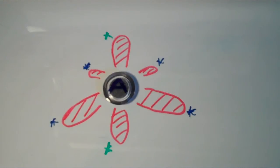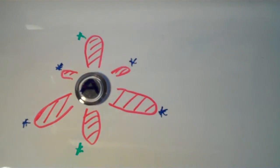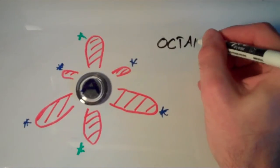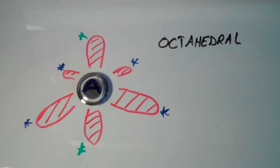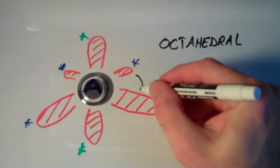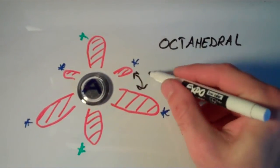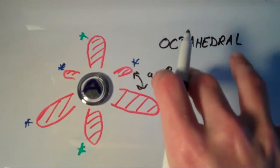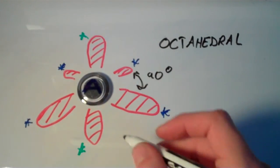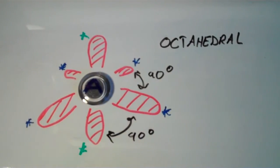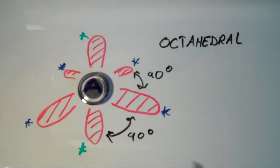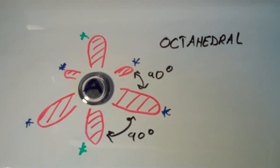So this shape is what we call octahedral. And the angles between any two of these groups, they are all 90 degrees. So the angle between these two is 90, although it may not appear that way on my drawing here. And the angle between these two is also 90 degrees. Between any two of them, all these electron groups are equivalent in an octahedral arrangement.